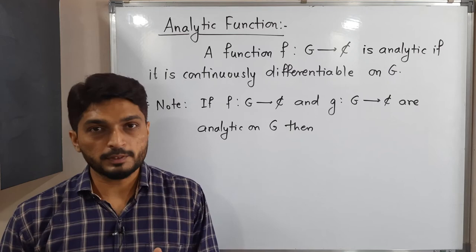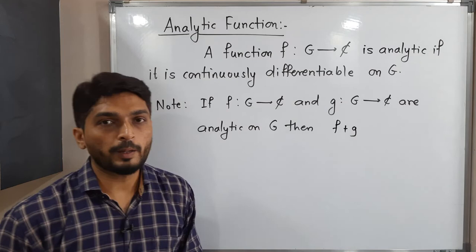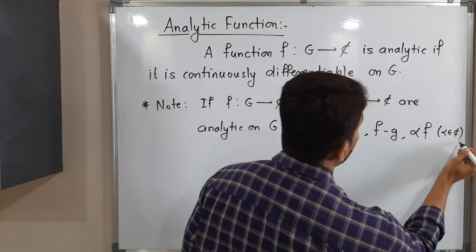So f from G to C and g from G to C are analytic on G. Then f plus g is also analytic on G, f minus g is also analytic on G, and alpha into f is also analytic on G, where alpha is any complex number.